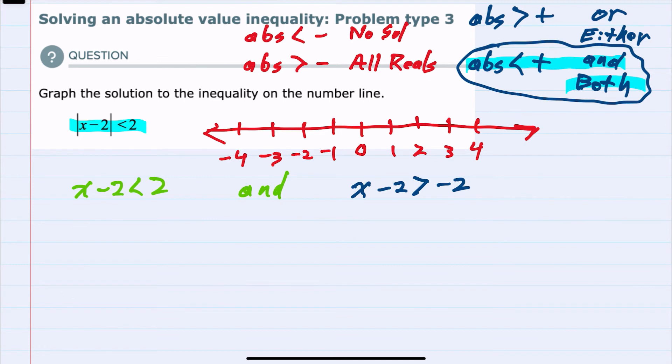On the left-hand side, we would add the 2 over to the other side to get the x by itself, leaving us with x is less than 4.